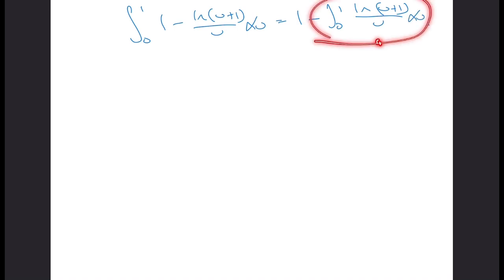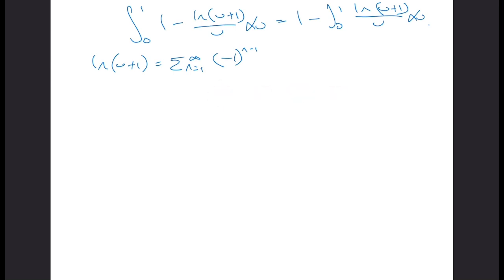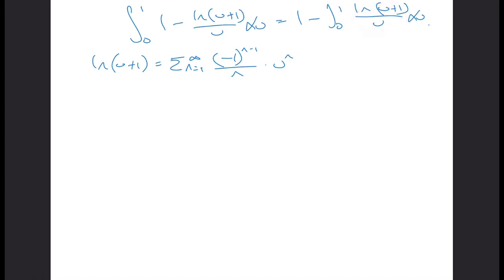How we're going to attack this is by using the Taylor series expansion of log(u plus one). We have an infinite sum going from n equals one to infinity of minus one to the power of n minus one, divided by n, multiplied by u to the power of n. This gives us u minus u squared over two plus u cubed over three minus u to the four over four, etc. When we divide this by u, all that happens is our power drops by one.